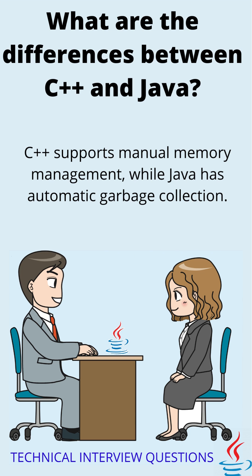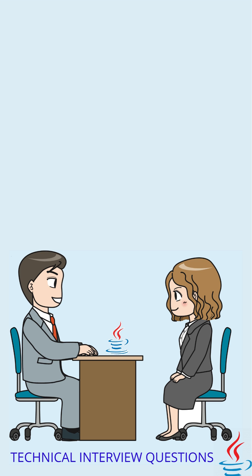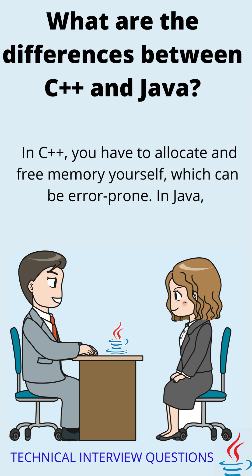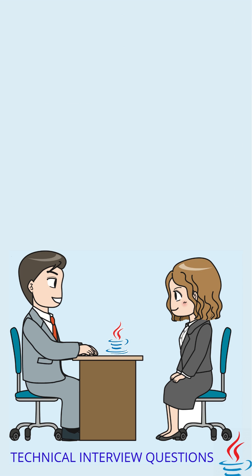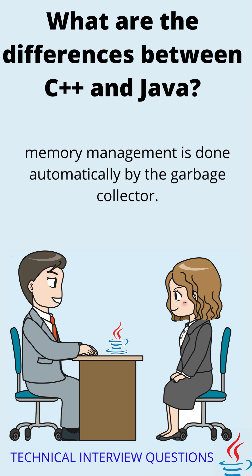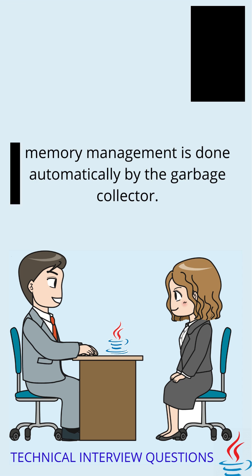The third difference is that C supports manual memory management, while Java has automatic garbage collection. In C, you have to allocate and free memory yourself, which can be error-prone. In Java, memory management is done automatically by the garbage collector.